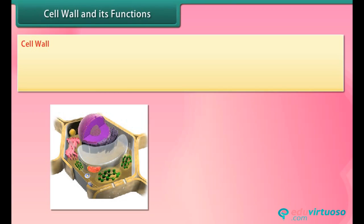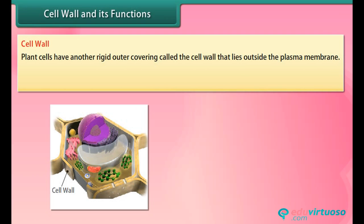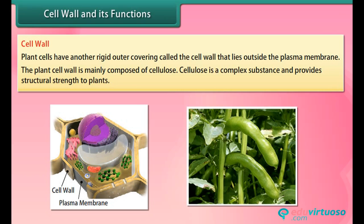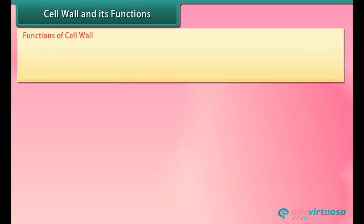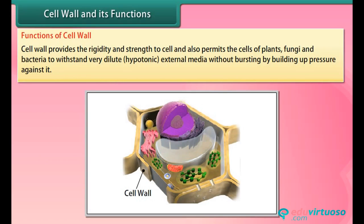Plant cells have another rigid outer covering called the cell wall, which lies outside the plasma membrane. The plant cell wall is mainly composed of cellulose, a complex substance that provides structural strength to plants. The cell wall provides rigidity and strength to the cell, and also permits the cells of plants, fungi, and bacteria to withstand very dilute hypotonic external media without bursting, by building up pressure against it.